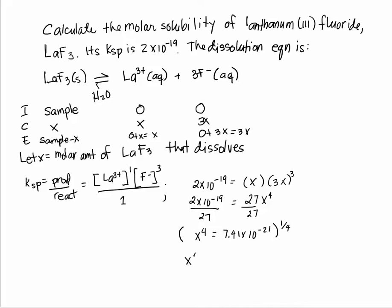So X to the fourth raised to one-fourth equals seven point four one times ten to the negative twenty-one raised to the one-fourth. Four times one-fourth—that's one. So X equals the fourth root of seven point four one times ten to the negative twenty-one.